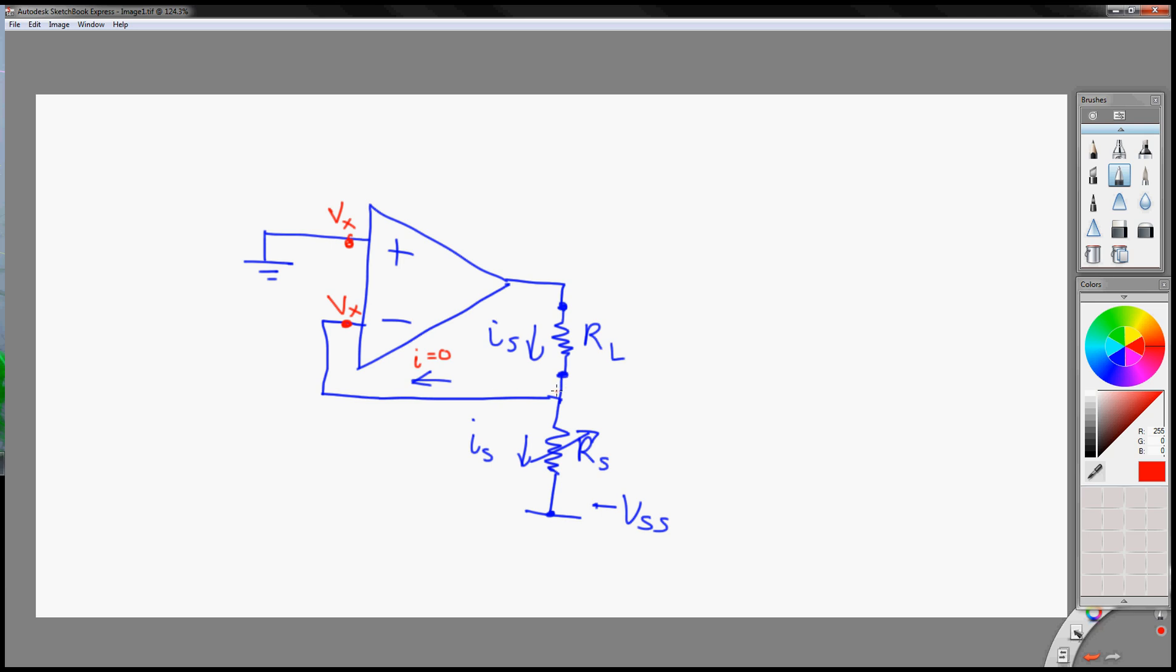So, what you have here is Vx, which is equal to zero. So, IS is essentially zero minus VSS over RS.